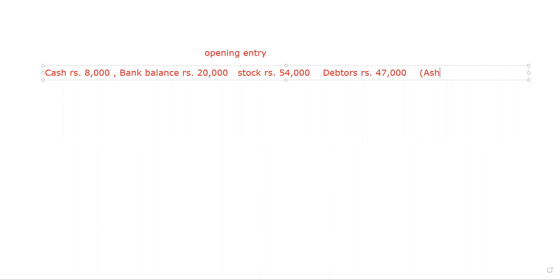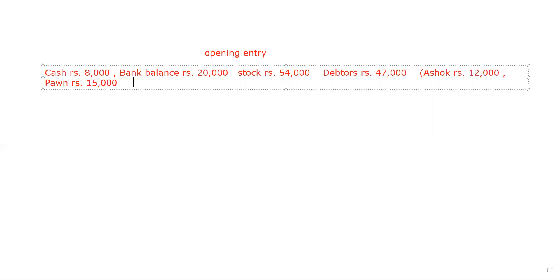The debtors of the business are: Ashow Rs. 12,000, Kaman Rs. 15,000, and Vivek Rs. 20,000. These three are the debtors of the business, and this is the opening balance. Machinery is Rs. 60,000.